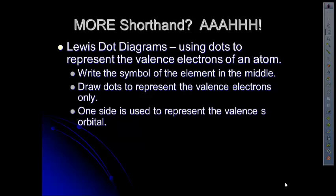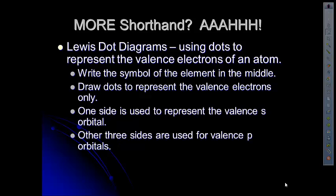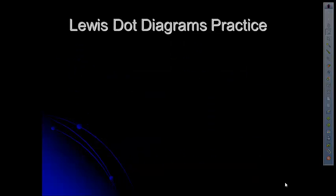One side we're going to use to represent the s orbital. And then the other three sides are used for the p orbitals. And we have to use Hund's rule. Remember the order for placing the electrons into the p orbitals. So I'll show you how that works. Hund's rule is that empty bus seat where you have to put an electron in each of the empty sides before you put a second electron there. So let's look at an example.